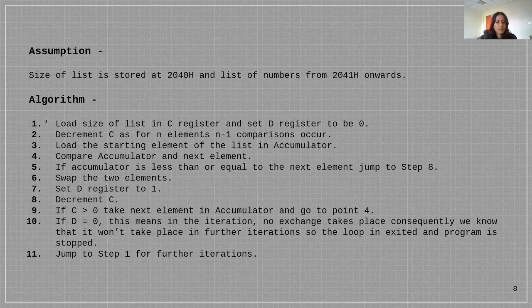The algorithm consists of the following 11 steps. First we load the size of list in C register and set D register to 0. Then we decrement C as for n elements, n minus 1 comparisons occur.